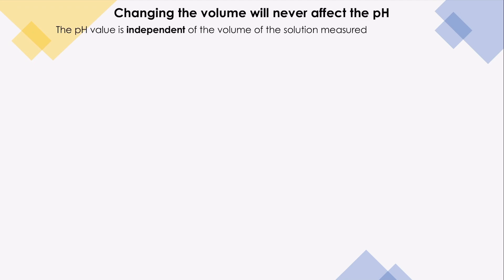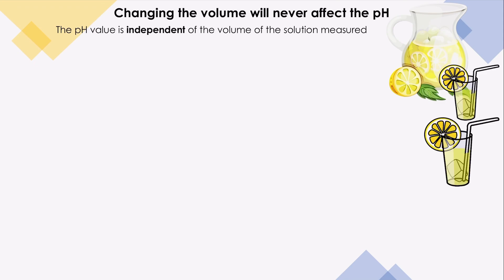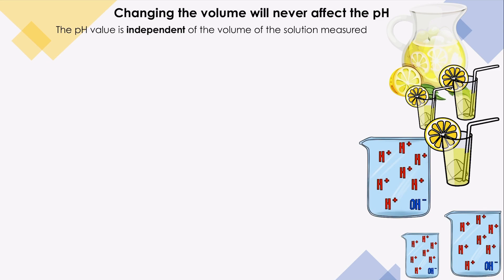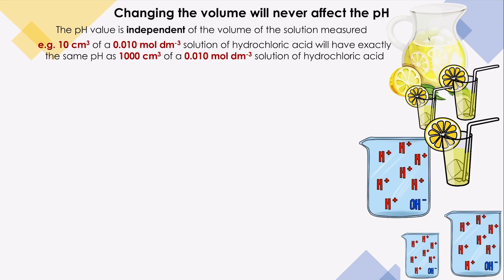How can we understand that? I'll give you a very simple example. If we have this jug of lemon juice and we distribute this amount in three different size cups, do you think they will taste different? No, they will taste the same. Same with any acid — lemon is acidic of course. If we have this amount of acid in this beaker and distribute it in two beakers of different sizes, they will have the same concentration of hydrogen ions. So the change in volume will never affect the pH, as long as they have the same concentration.